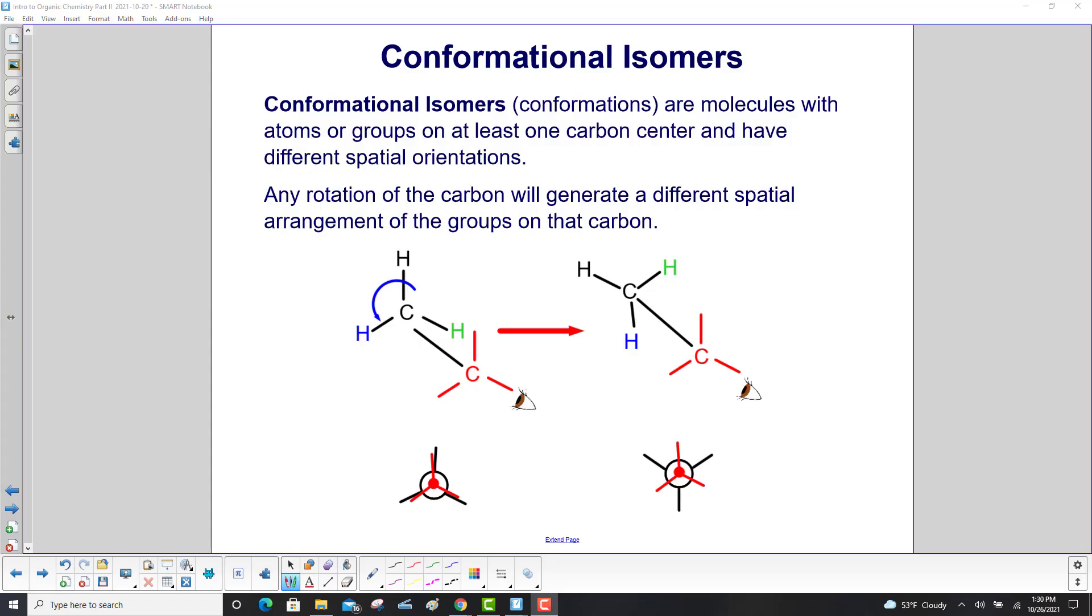Conformational isomers are molecules with atoms or groups on at least one carbon center and have different spatial orientations. Any rotation of the carbon will generate a different spatial arrangement of the groups on that carbon.